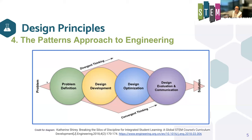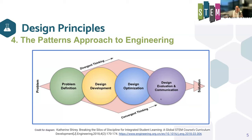For our engineering process, we look at this process for every engineering project. We start with a problem, look at constraints — often cost or materials — then make a design and test it, collecting data. We evaluate it: can it be better? It's an iterative process — we go back and redesign, readjust, collect more data, then communicate about it, making a final evaluation of how well our design worked.